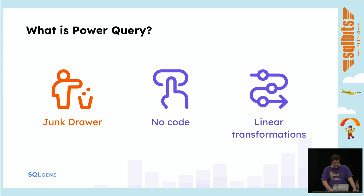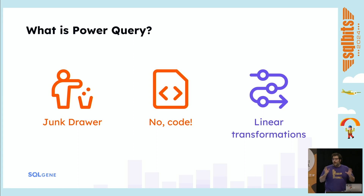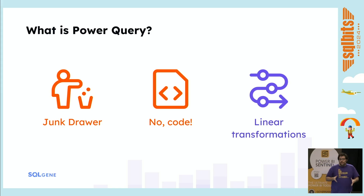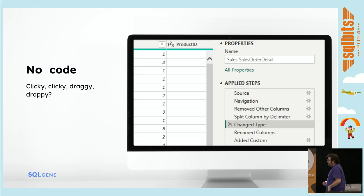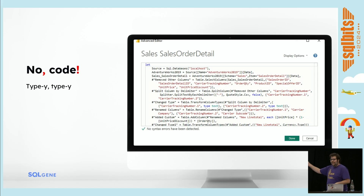So that's the first lie. The second lie: no code. Everything that you do is actually generating M code — they just don't show it to you. There's the 80-20 rule: 80% of what you ever need to do with Power Query, there's a button for it, and once you find it, it works. That other 20%, you're reading some Imke Feldman blog post about recursive self-joins and hating your choices in life. It looks like there are just steps — you do this and this and this — no code in sight, just names and gear icons. But behind the scenes, it's generating M code.